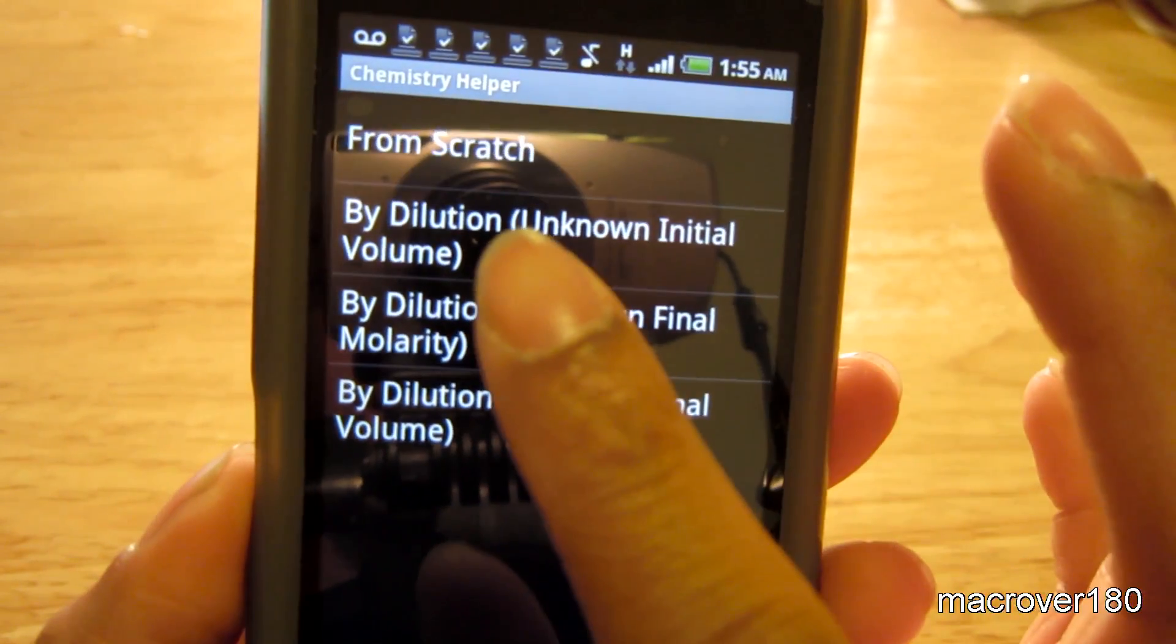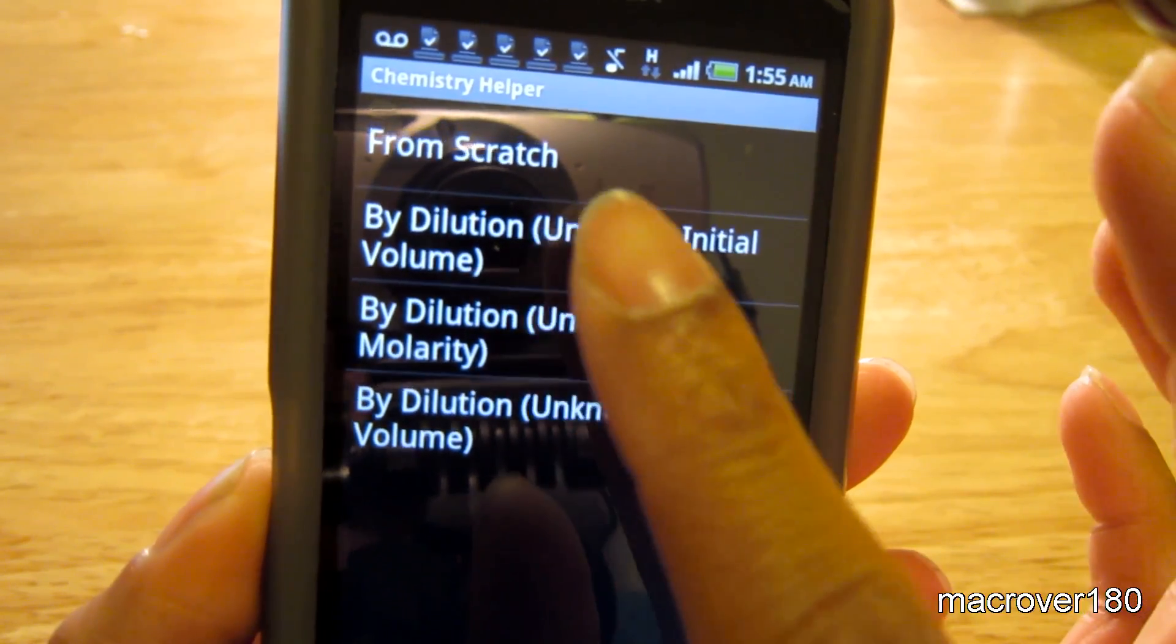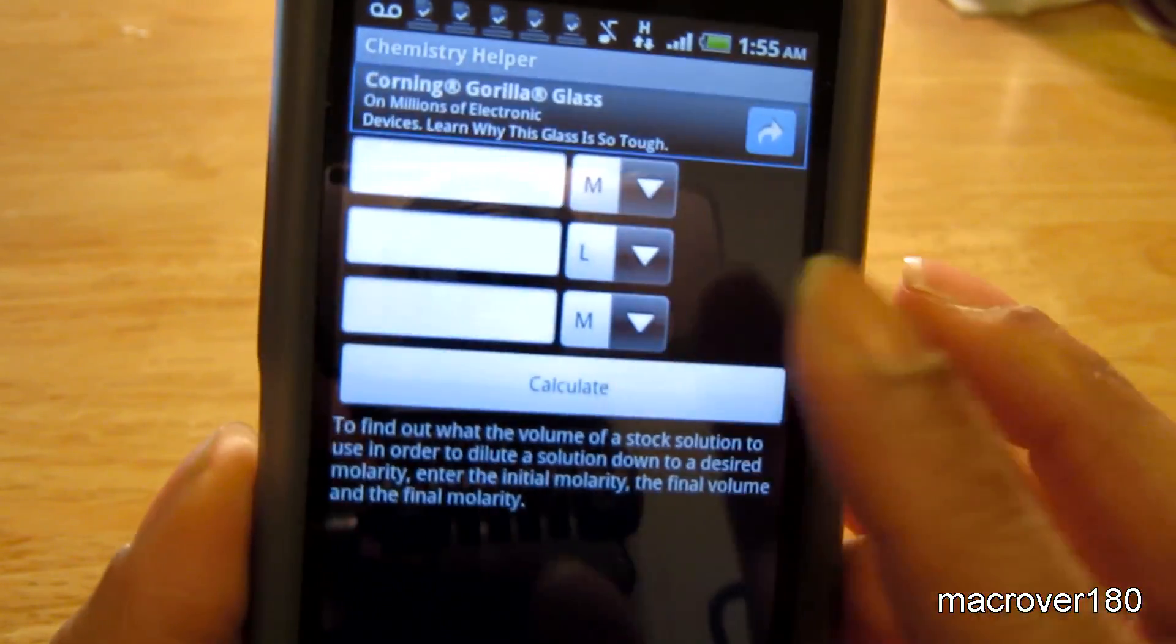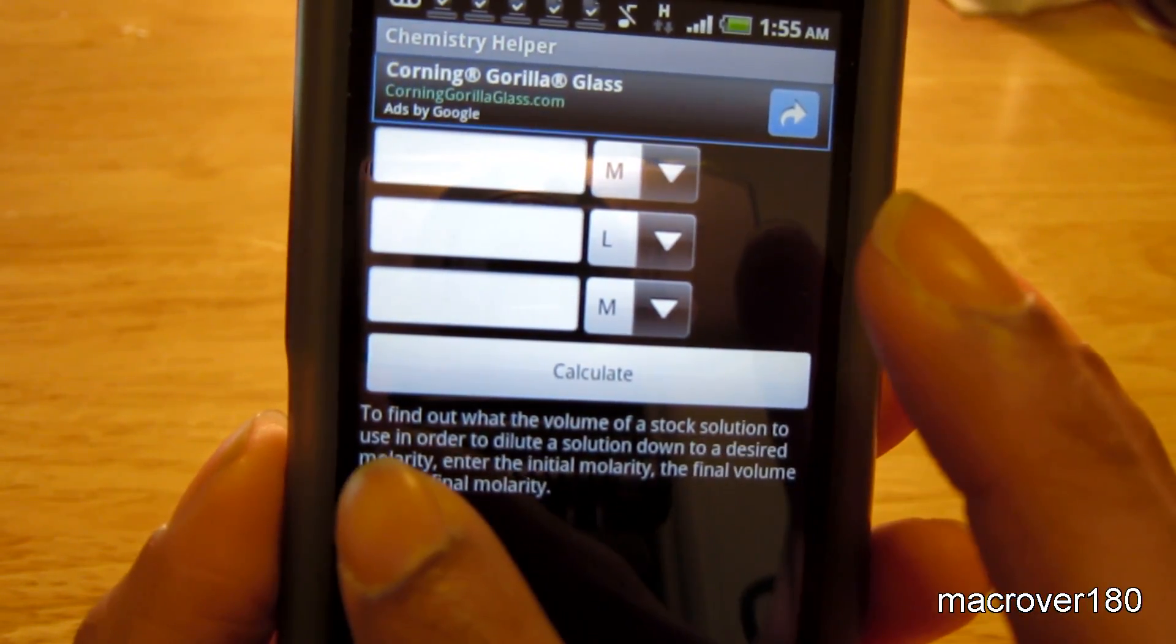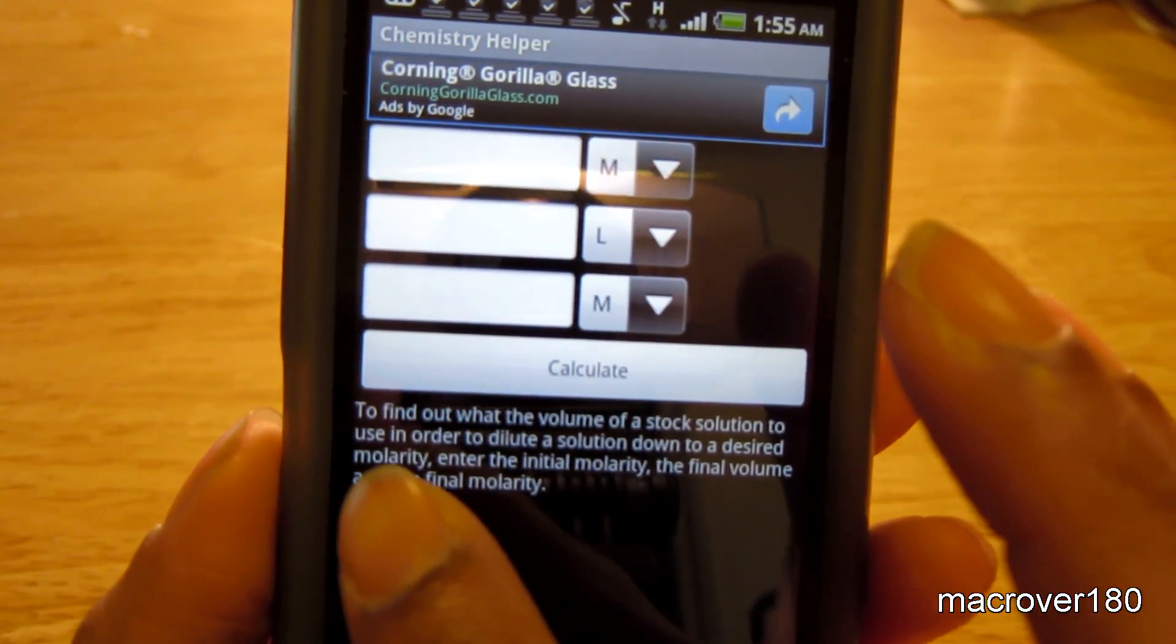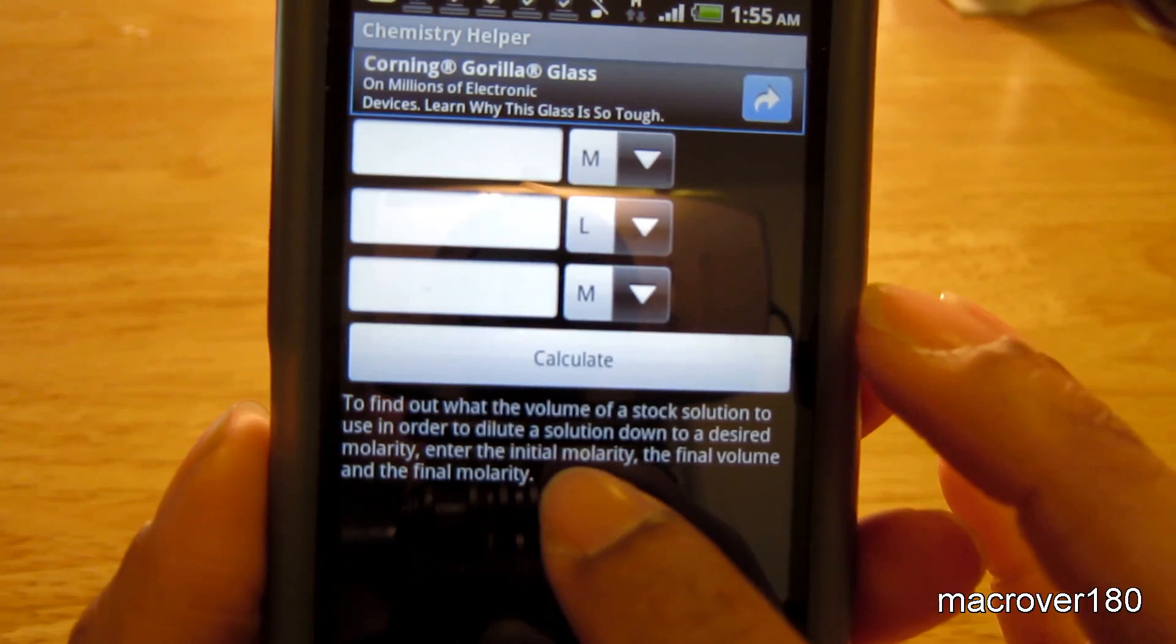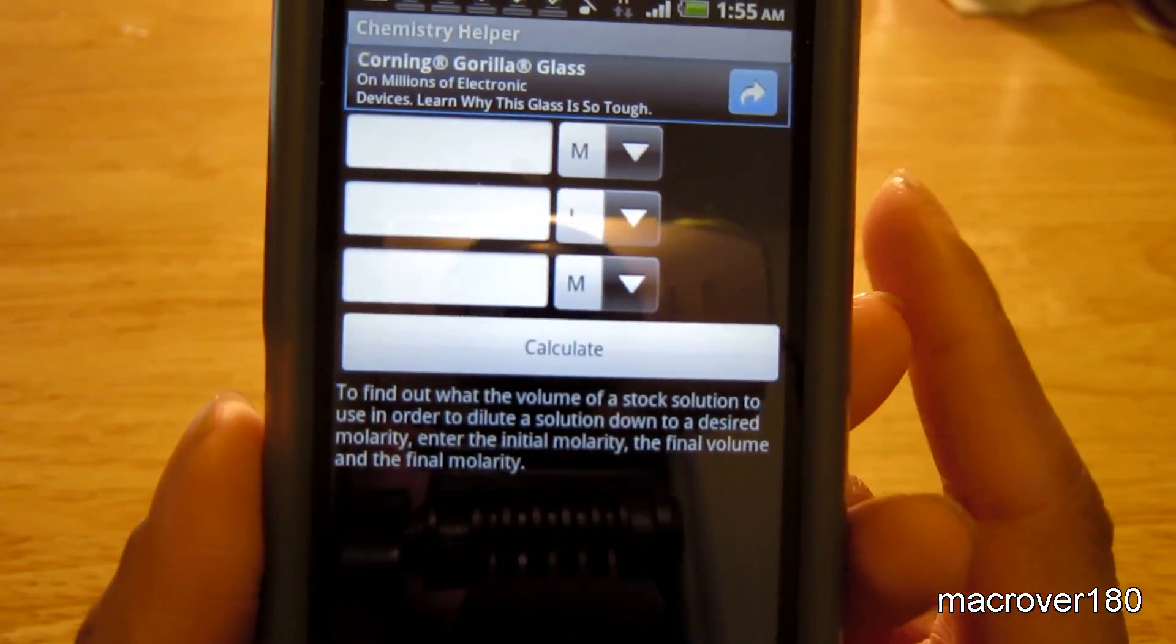You can do it by dilution using unknown initial volume. It tells you underneath to find out what the volume of the stock solution to use in order to dilute a solution down to a desired molarity, enter the initial molarity, the final volume, and the final molarity.